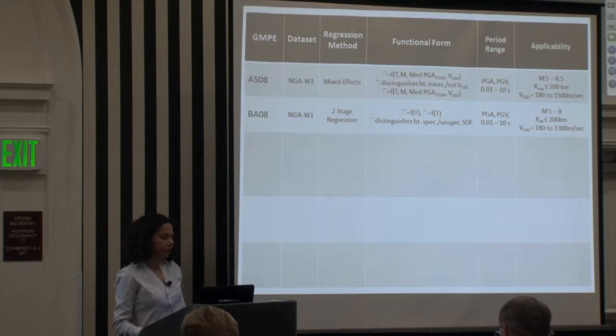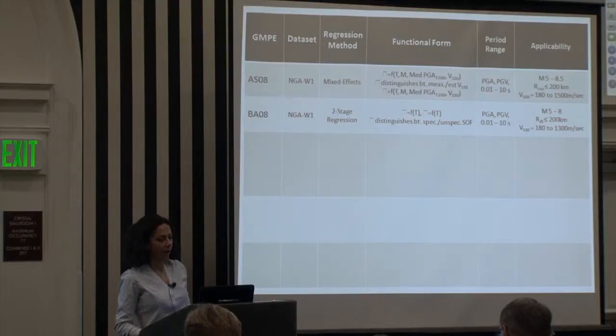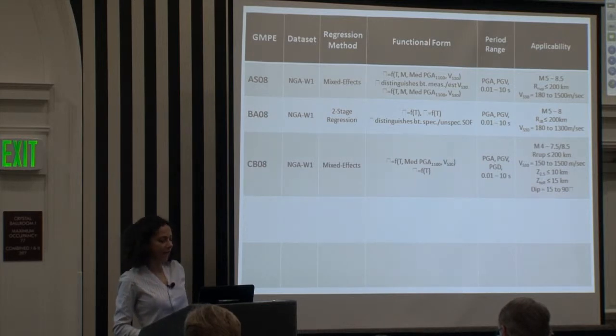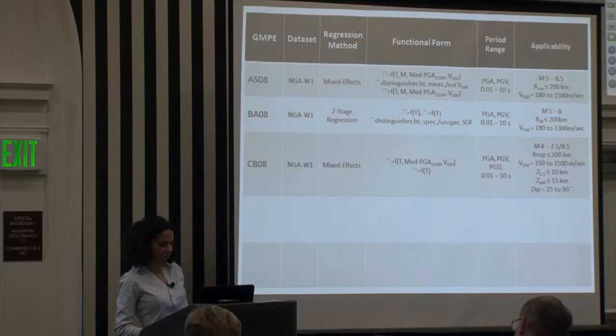Boore-Atkinson 2008 used two-stage regression to estimate their standard deviations. Both of their standard deviations, the within event and between events, were function of period only. The within event standard deviation includes soil non-linearity.